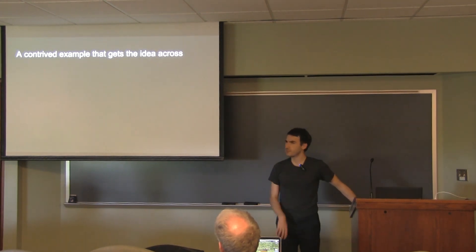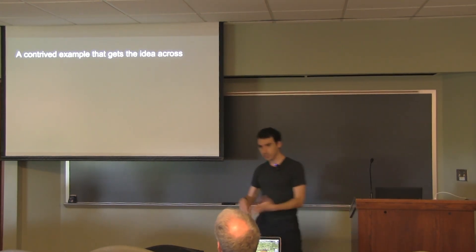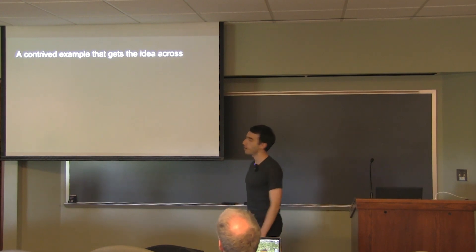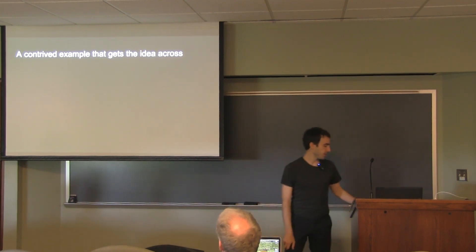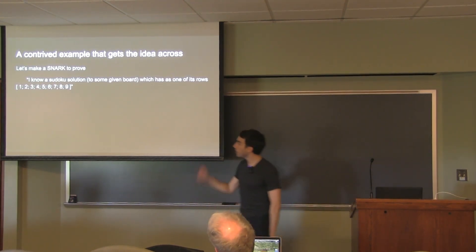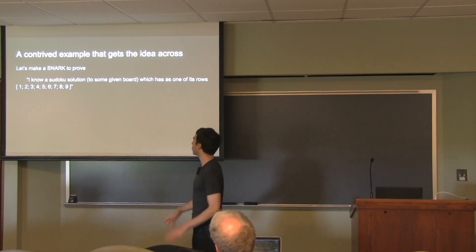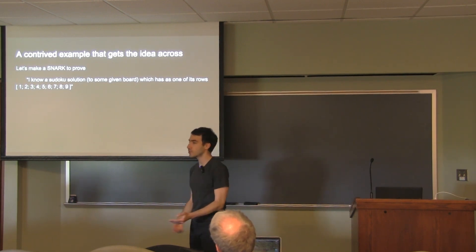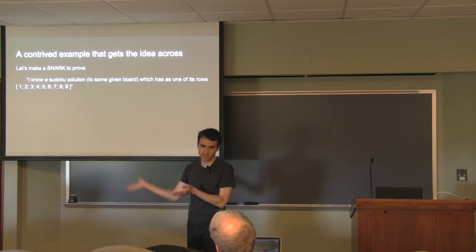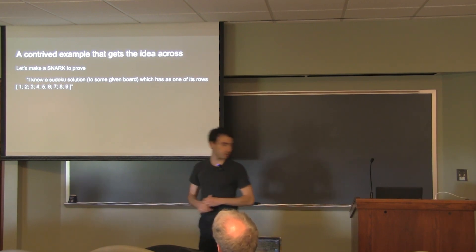Let me do a contrived example so you can see it in action. Let's make a SNARK which proves I know a Sudoku solution to some given board which has as one of its rows 1, 2, 3, 4, 5, 6, 7, 8, 9. That's the same as writing a Snarky program so that this holds if and only if we can provide answers to that program's requests such that it executes without an assertion failure.